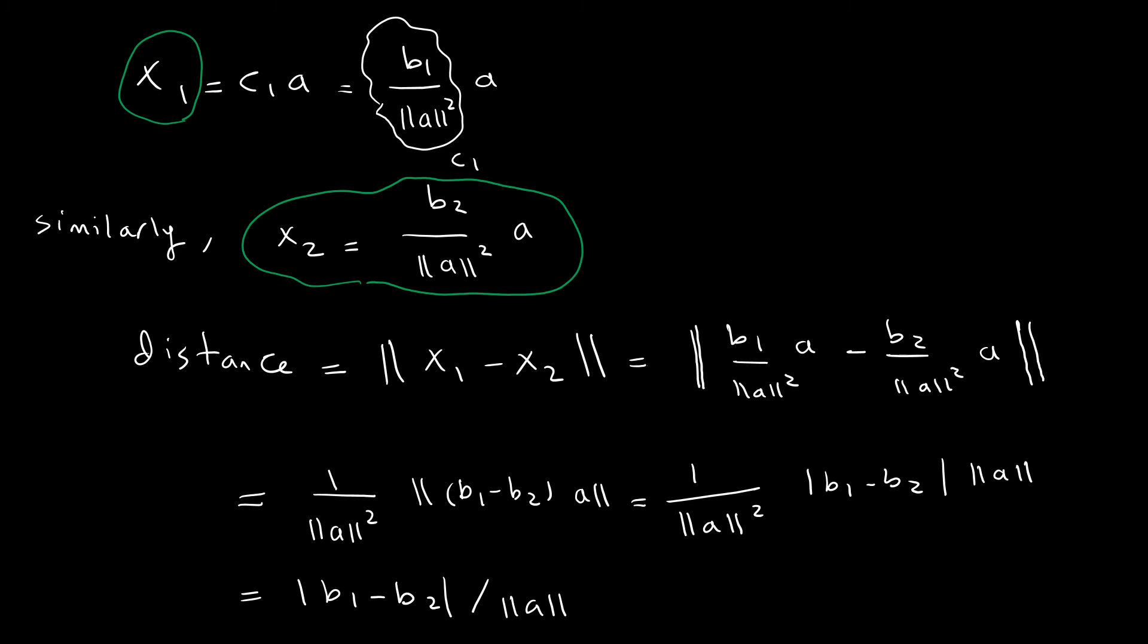I take the norm of the difference: distance = ||x1 - x2|| = ||(b1/||a||^2) * a - (b2/||a||^2) * a||. Since 1/||a||^2 is common and positive, I can pull this out. The scalars b1 and b2 can be pulled out as absolute value, leaving the norm of a.